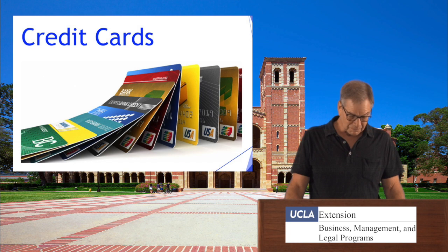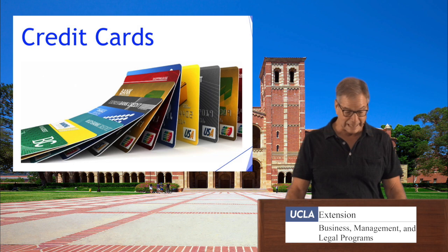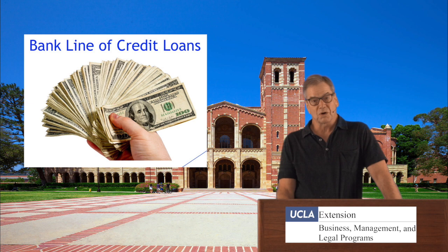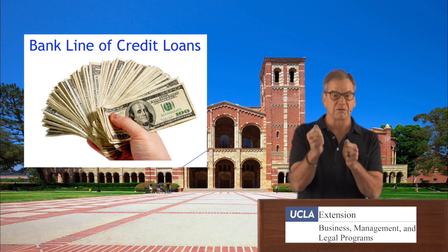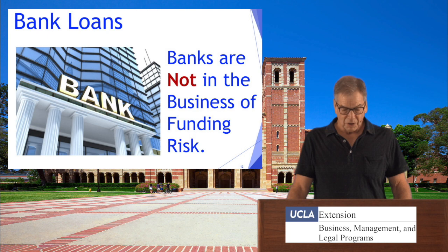Returning to credit cards — we all have them and they can get blown out of proportion. This comes back to Robert Kiyosaki: invest in cashflow, not debt. You've got to manage these carefully. Bank lines of credit work very much like a credit card. In most cases, when you open one, they give you a checkbook — when you write checks, it comes out of that credit line.